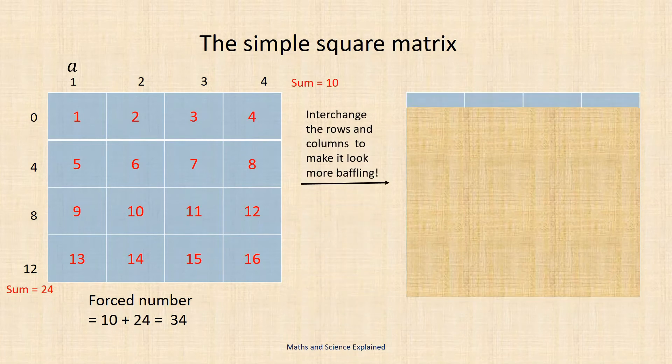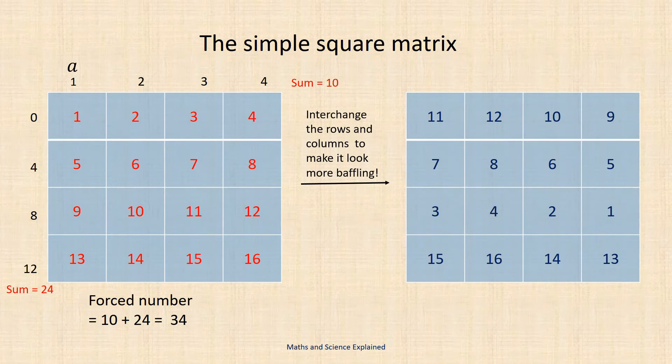The rows and columns in the matrix can be interchanged to make the numbers more baffling. This makes no difference to the force number which remains at 34.